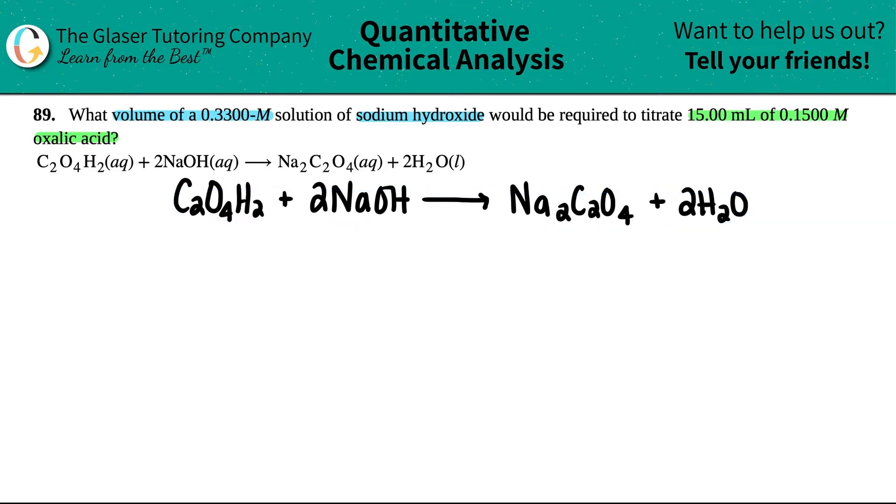Next thing I'm gonna do is I'm just gonna write down all the values and what they're asking for in the question. So they told me that I have 15 mils of a 0.15 molarity oxalic acid. Now, this is sodium hydroxide, right? So if this is the base, this is one of your six strong bases, this should be the acid, right? This is an acid base, basically equation. This is the acid plus the base gives me a salt and water. So this is oxalic acid. Okay. So we have 15 mils and we have 0.1500 molarity. Cool.